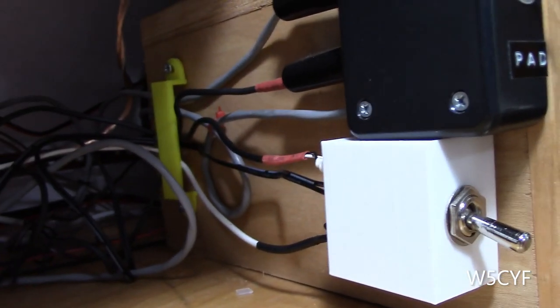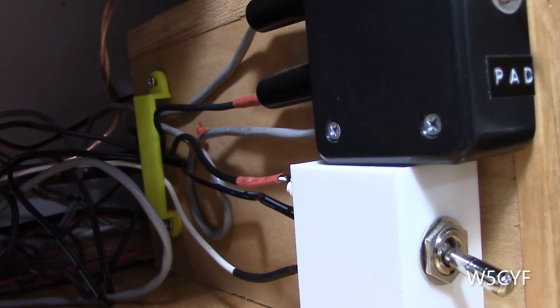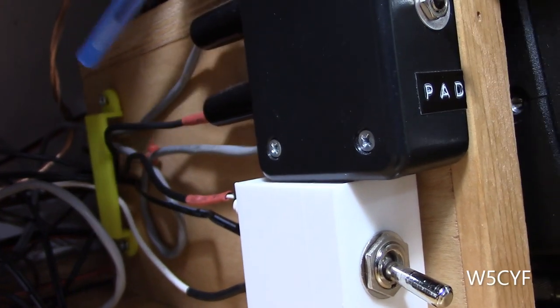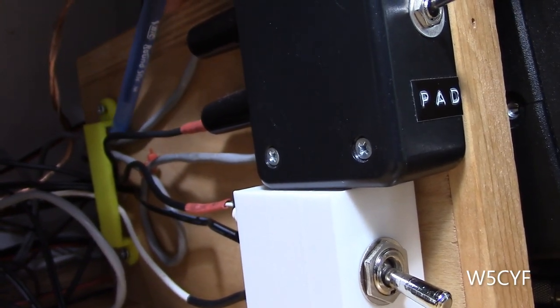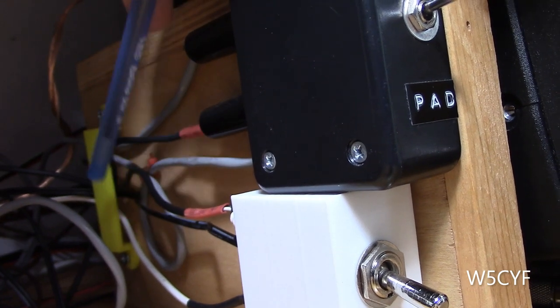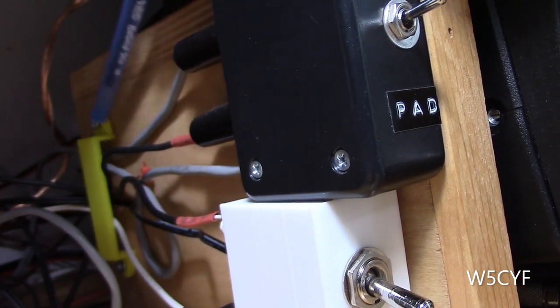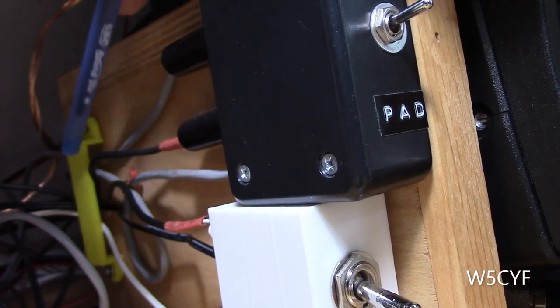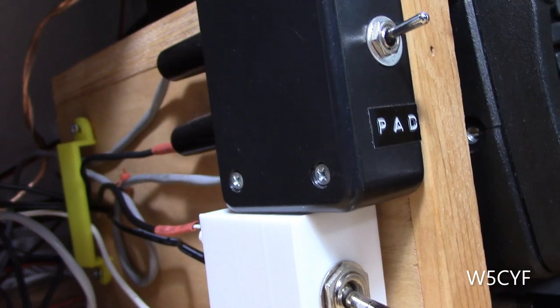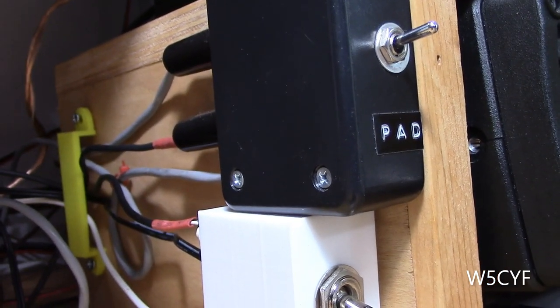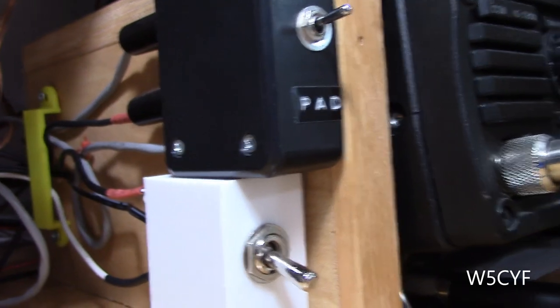And by the way I'll also put down here in the description a Thingiverse link. These are really handy. They're 3D printed to help organize and you can leave them loose on there. They've got a couple of screw holes on each end of it and I'll put the Thingiverse file for that if you have a 3D printer. It helps with some cable organization around your desk.